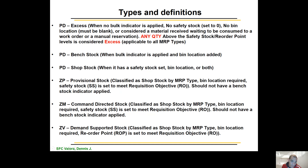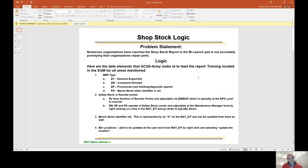Your ZV lines are your demand-supported stock, classified as shop stock. The bin location is required, and the ROP is required to meet requisition objectives. This may sound a little confusing, but the more you work with shop stock the more you'll understand. The most important thing to remember is that ZV lines are demand-supported. If you're running your demand analysis quarterly like you're supposed to, you can capture this and adjust those stock levels.